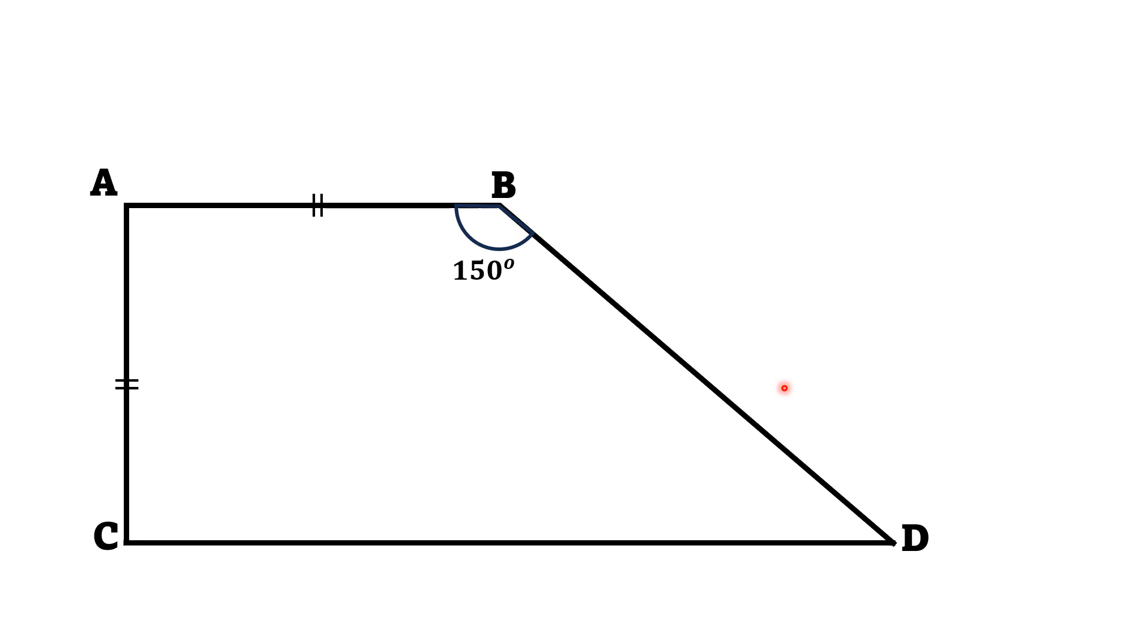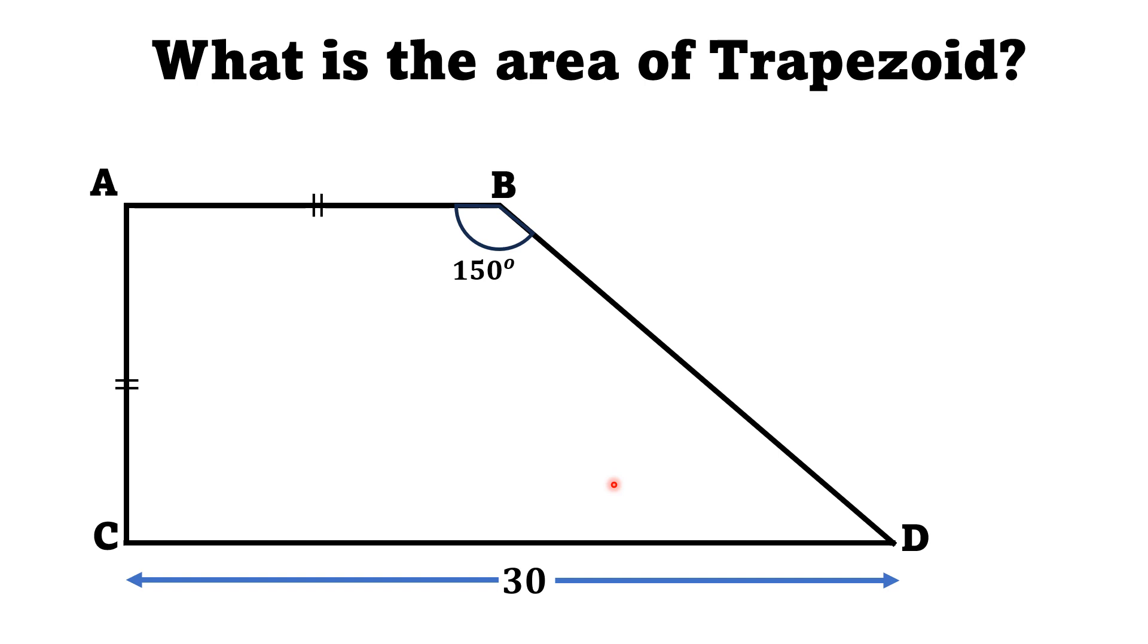If the angle at vertex B is 150 degrees and the length CD is 30 units, then we have to find the area of the trapezoid. Keep in mind that the figure may not be 100% true to scale.